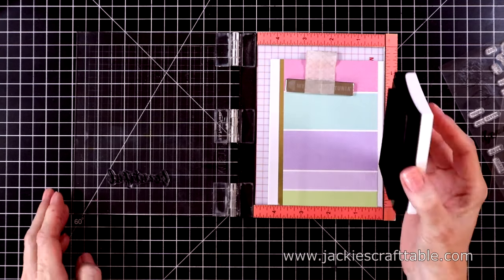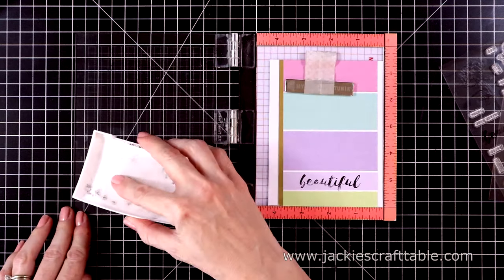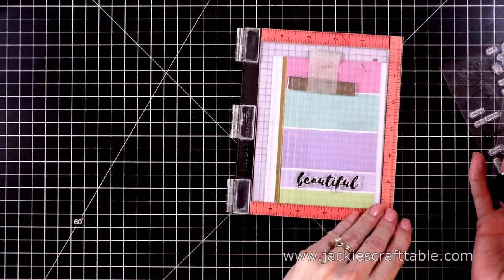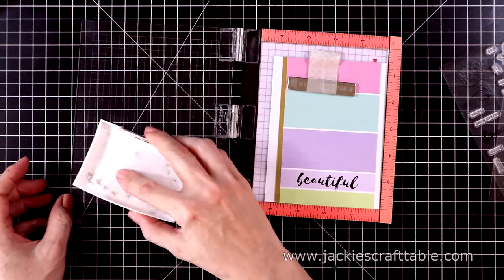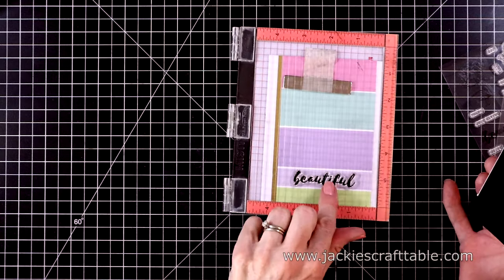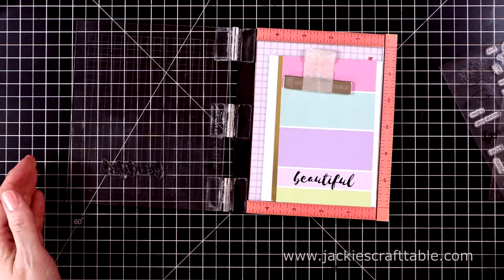I'm going to stamp one of the sentiments that says, beautiful, right onto the pattern paper. I do end up stamping this a few times. I just couldn't get the F in beautiful to stamp out properly. And I don't like to smush it too hard. So the third time was the charm there.